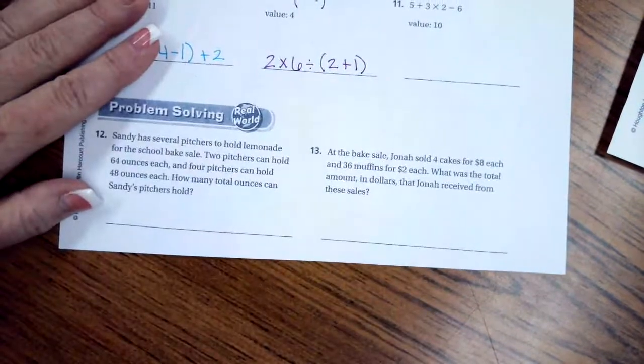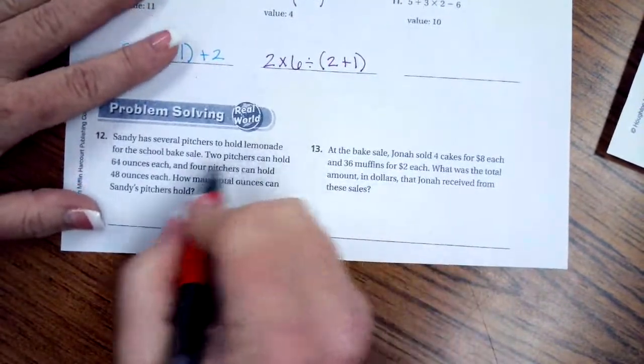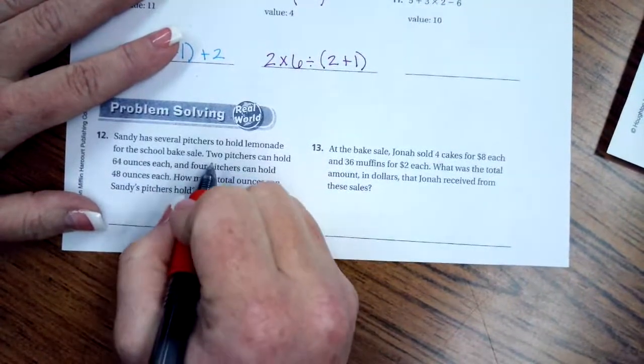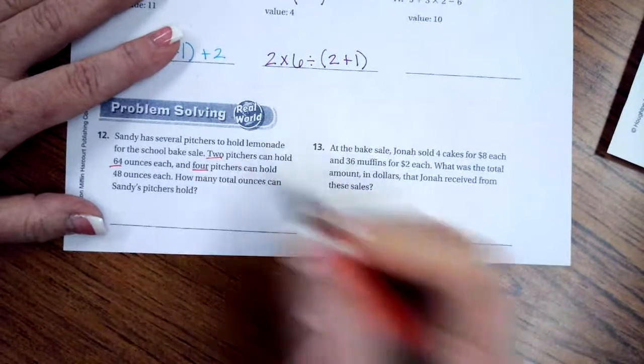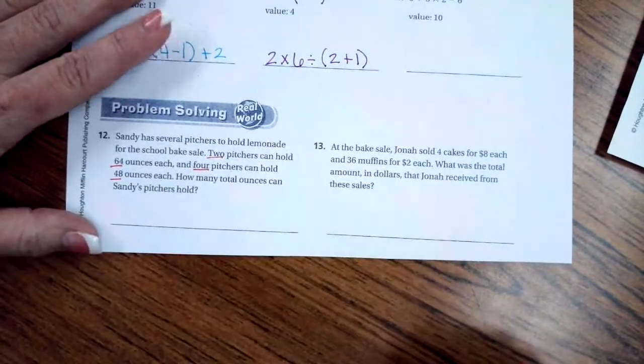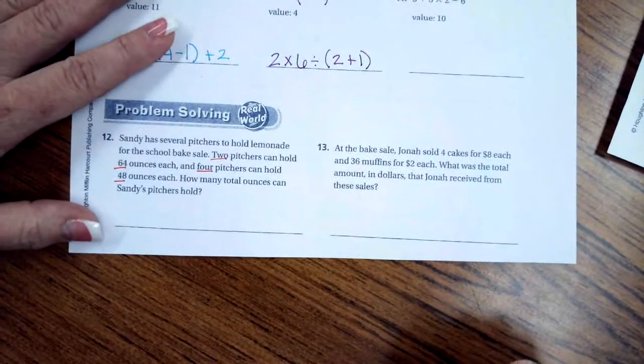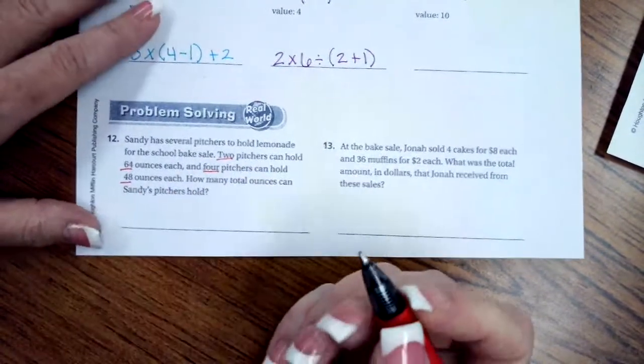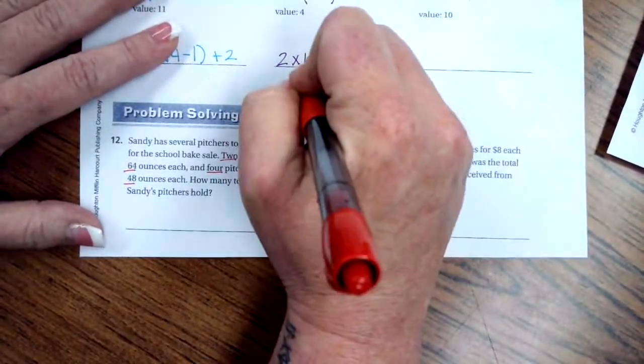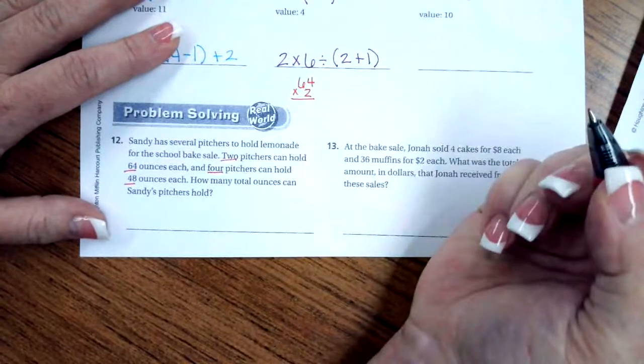We're going to go down and do number 12. Sandy has several pitchers to hold lemonade for school bake sale. Two pitchers can hold 64 ounces each, and four pitchers can hold 48 ounces each. How many total ounces can Sandy's pitchers hold? So I need 64 times 2. So I'm going to do this up here just so that I have some room. So 64 times 2.